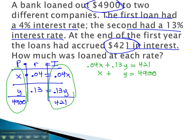We can now solve this equation using the addition method quite nicely. This time, let's eliminate the x by multiplying the second equation by negative .04.